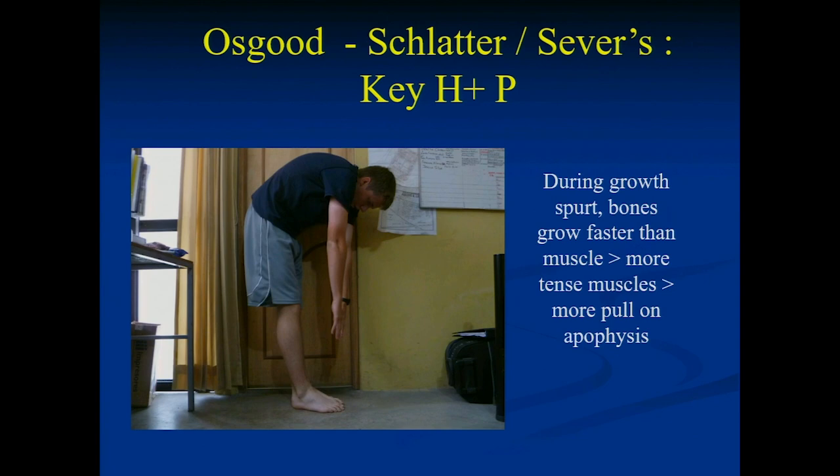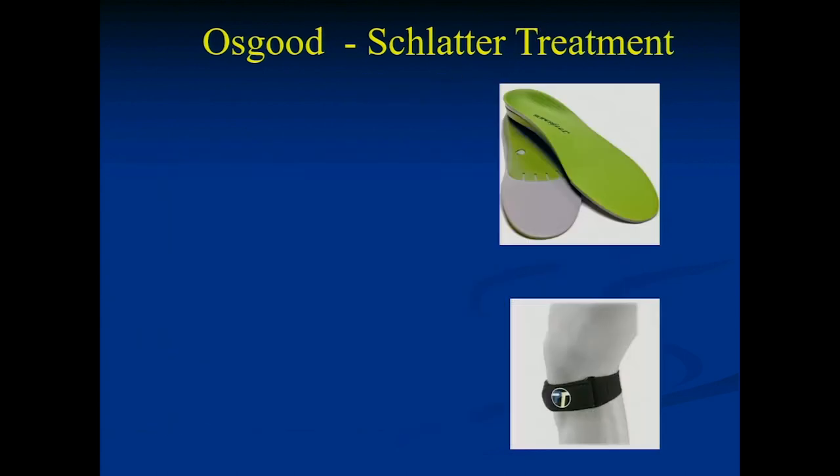Key physical exam finding: tenderness is over the bone, not the tendon — that applies to all apophysial overuse injuries. They'll also be very tight during their growth spurt; have them try to touch their toes or stretch their hamstrings. The tighter those muscles, the more sports they're playing, the more likely they'll have these issues. Treatment is basic RICE principles, but really the key is cutting down activity — that's the toughest conversation to have. There's no magic injection, pill, or brace; they just have to stop.